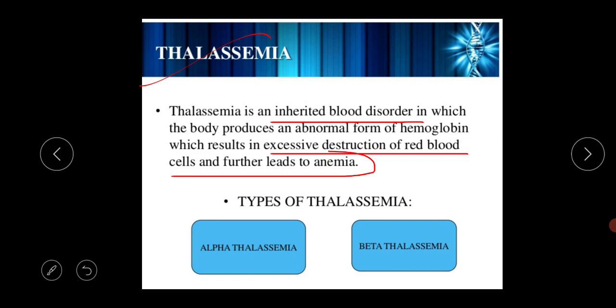There are two types of thalassemia we can see: the first one is alpha thalassemia and the second one is beta thalassemia. Before discussing these, we need to understand the hemoglobin structure because thalassemia is related to the hemoglobin structure.